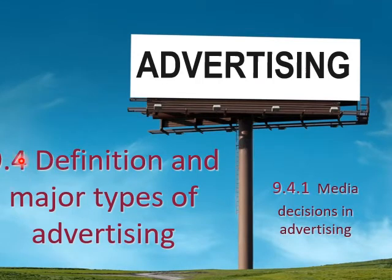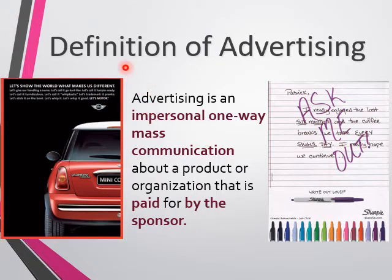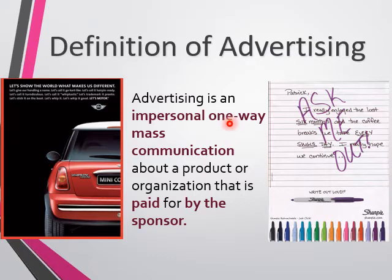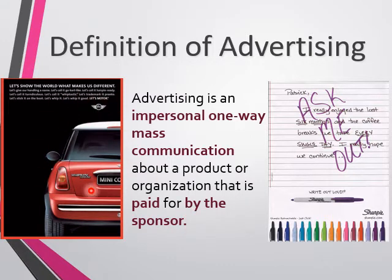Moving on to advertising - we're going to look at the definition, major types, and some of the decisions that need to be made before you decide what advertising type to use. Advertising is actually impersonal, one-way mass communication. Impersonal means it is not for one person - it's for everybody, for the whole public. It is one-way because it is just from the advertiser to the whole market. It is communication about a product or an organization that is paid by the sponsor.